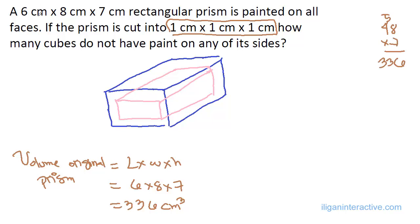In that case, the length, let's assume this is the length, will now be 4 cm. Because you take the left side and the right side, you take that off because that has paint on it. It's like you're getting rid of that outer 1 cm thick layer of cubes.